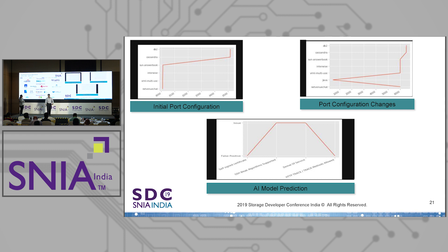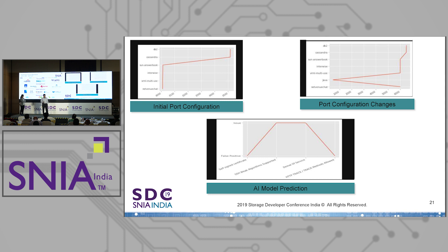Here's a simple use case example. You have an initial port configuration, and over time you change a port — for example, opening a Java service on port 443. Whenever that port configuration changes, the AI model analyzes the data and identifies real issues. In the third AI model prediction output, even though four issues were predicted, two are real issues and two are false positives. The model raises an alarm only for those real issues — that's how this AI model works.